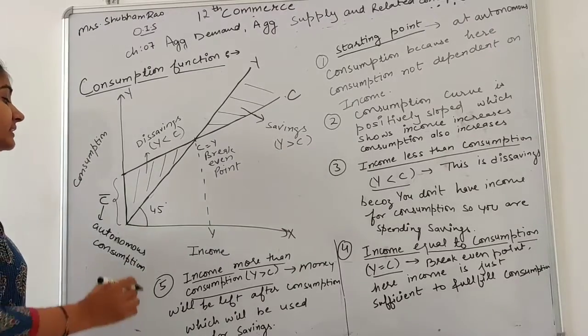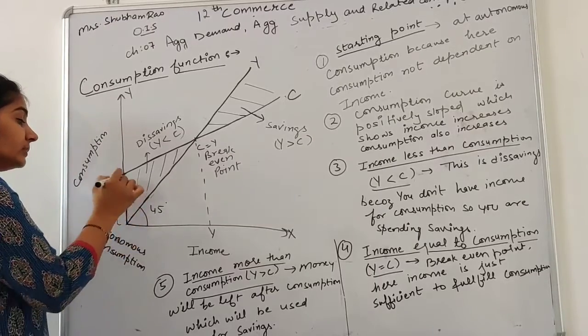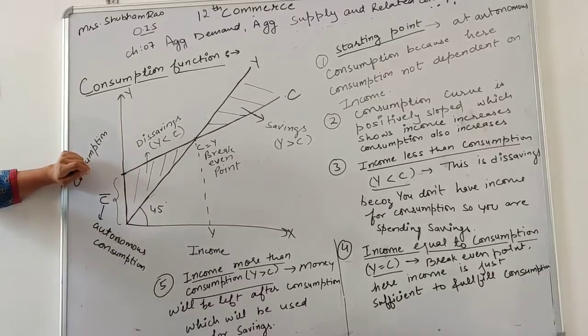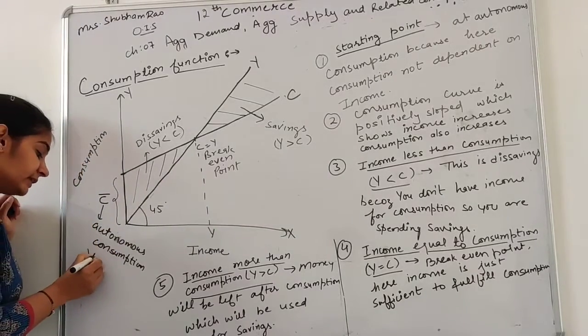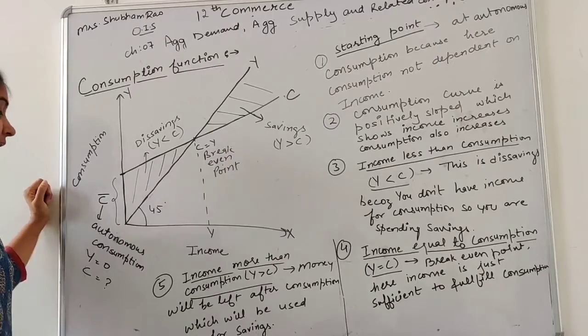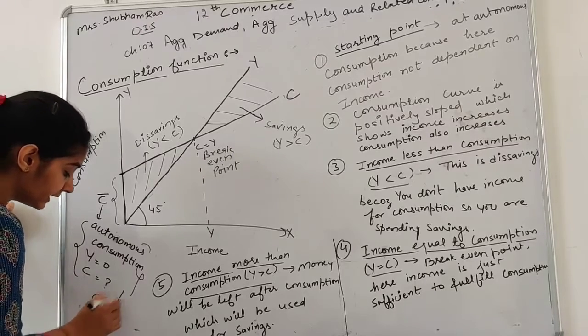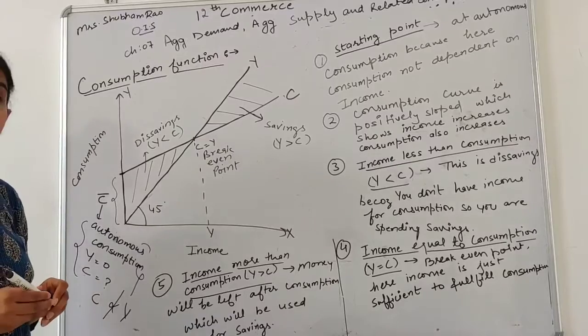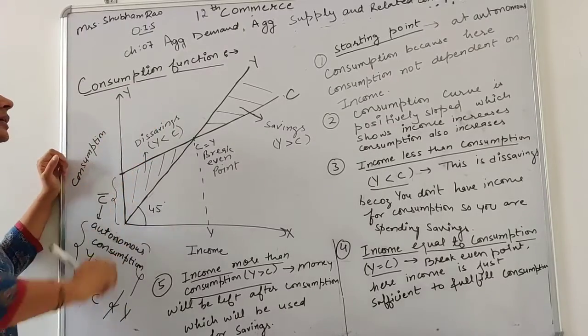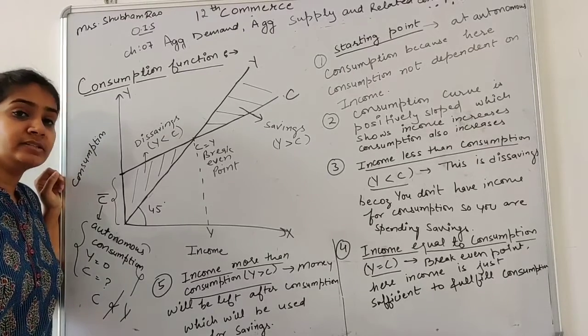We are increasing, but at the starting point what do we see? Consumption curve is above. We have zero income but consumption. So what do we see? Consumption is not dependent on income because when income is zero there is some level of consumption we are doing.